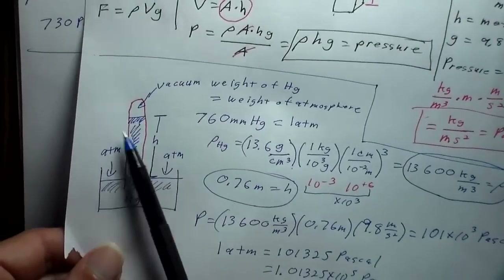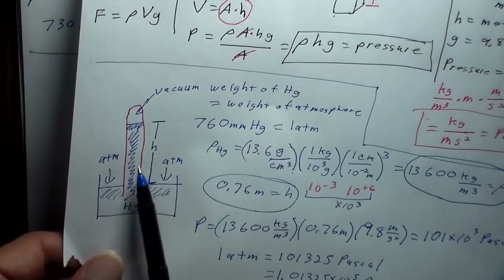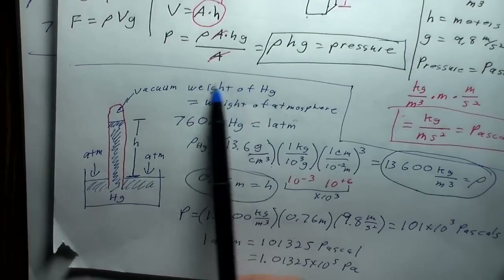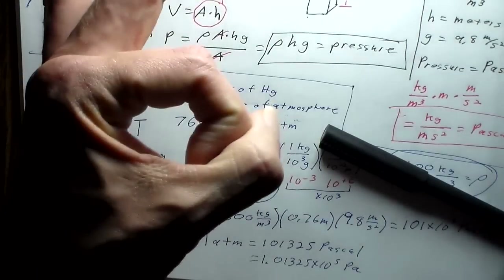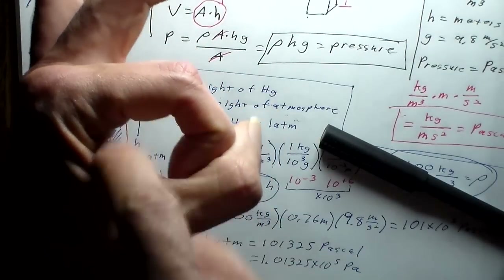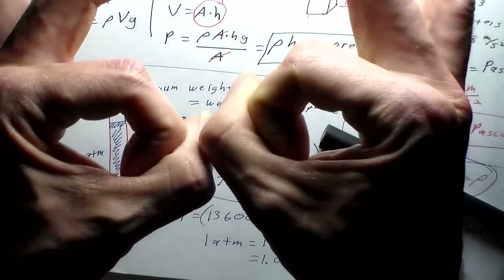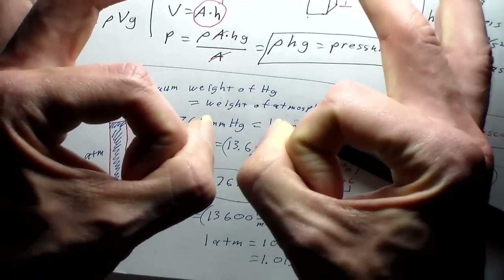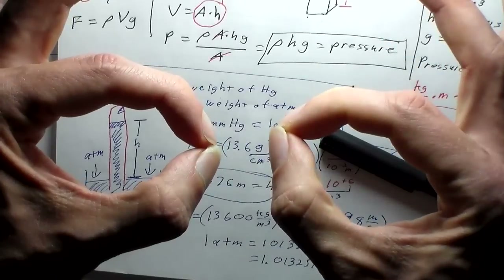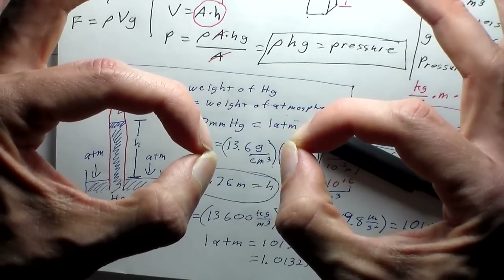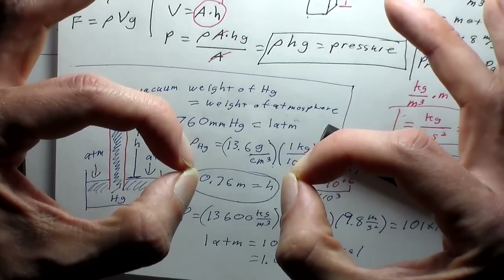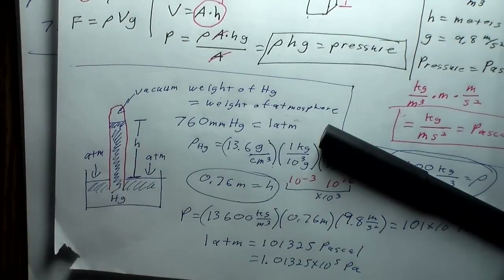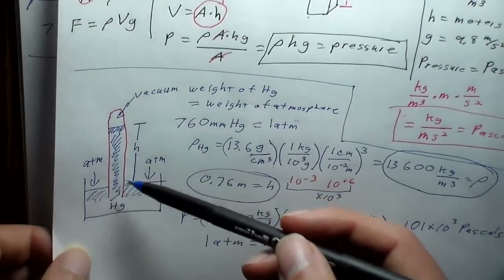We can use the barometer to figure out the mass of our atmosphere. The weight of the mercury for a particular cross-section equals the weight of the atmosphere above that cross-section. If we take this to the extreme, the entire weight of the atmosphere would be equivalent to surrounding the Earth with a sphere of mercury 760 millimeters thick. We want to find the volume of that mercury shell.